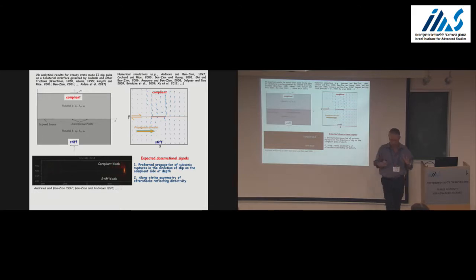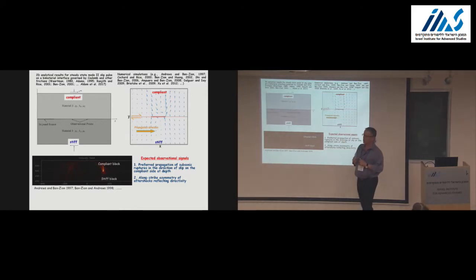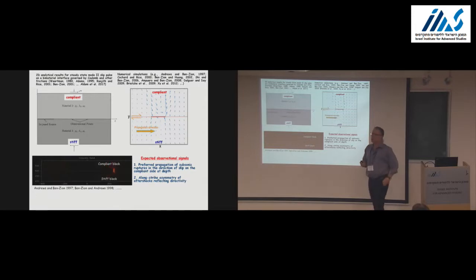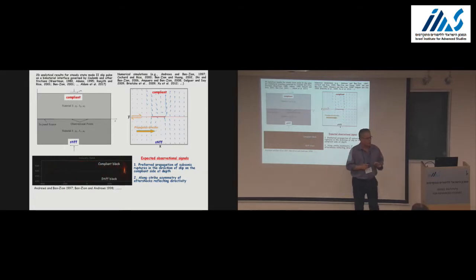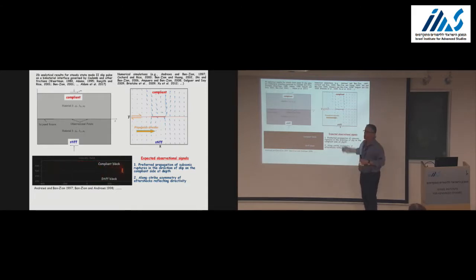The prediction we get from this — which we're going to test with field data — is that if I identify a bimaterial interface and I know the velocity structure and the sense of loading, I have some prediction for rupture direction. This prediction can be tested only with ruptures of small events, because in the instrumental period of just a few tens of years, we didn't have a single large earthquake on the San Jacinto. So I'm going to look at directivity with small earthquakes, while also wanting predictions to test with large earthquakes through long-term damage signatures.